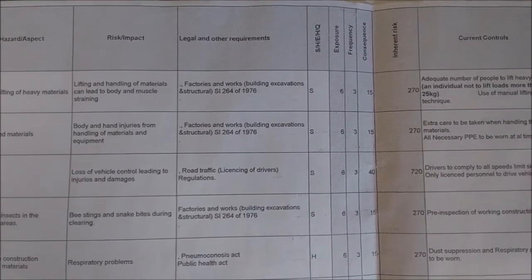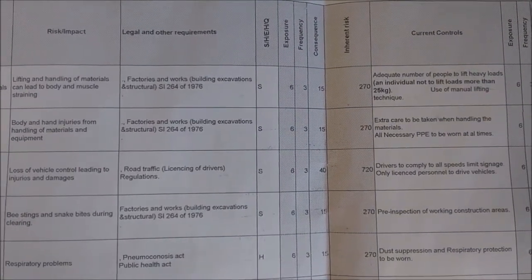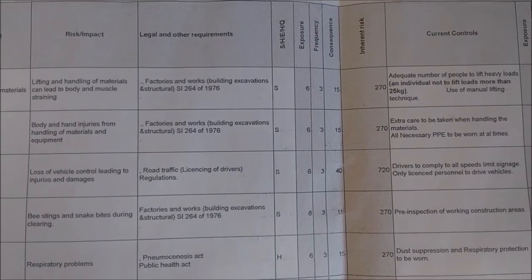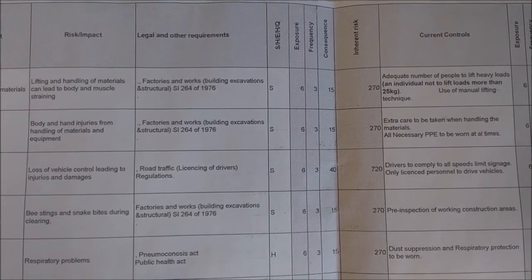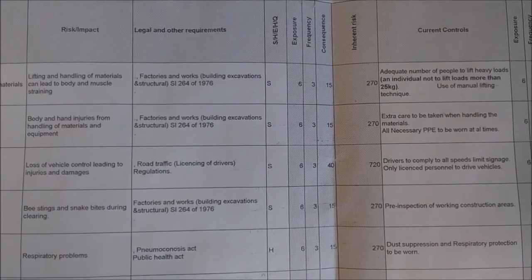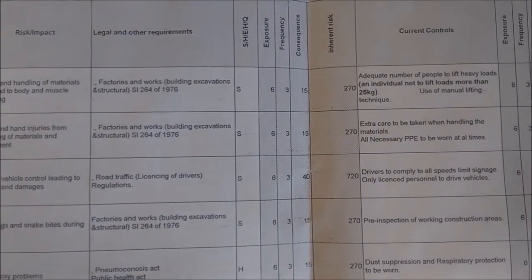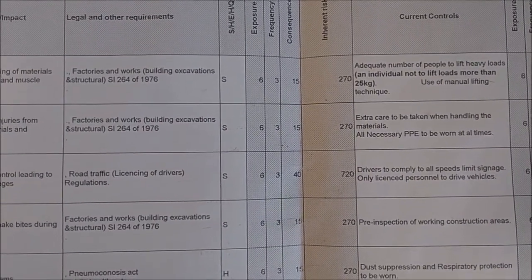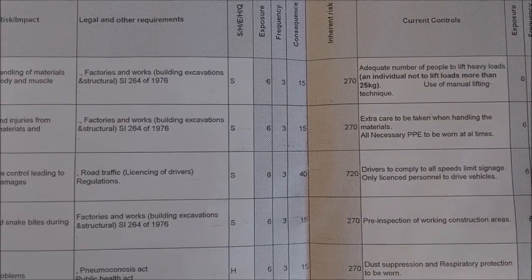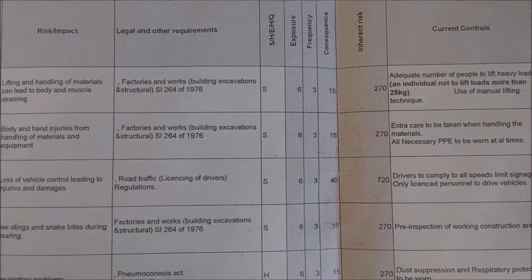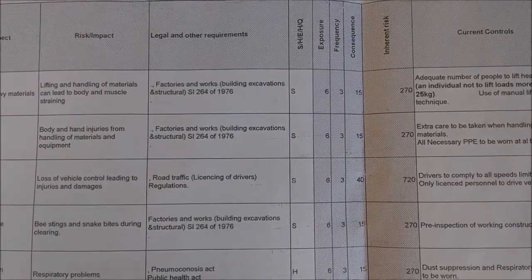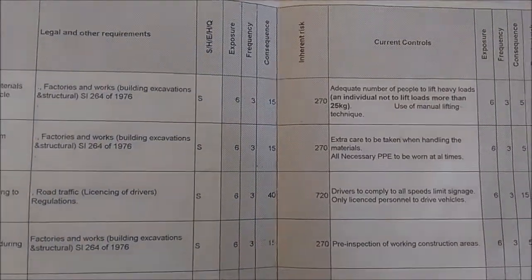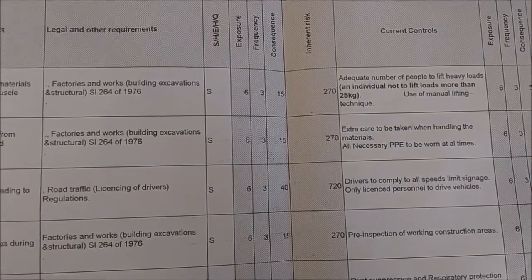The fifth column has legal and other requirements — these are the laws that relate to the particular activity and the hazard and risk involved. That is one reason I like this template: it includes the legal and other requirements so you can also comply with the laws of the land while doing your project or work. The next column is denoted by S, H, E, and Q — Safety, Health, Environment, and Quality — indicating whether the issue is a safety, health, or environmental issue.